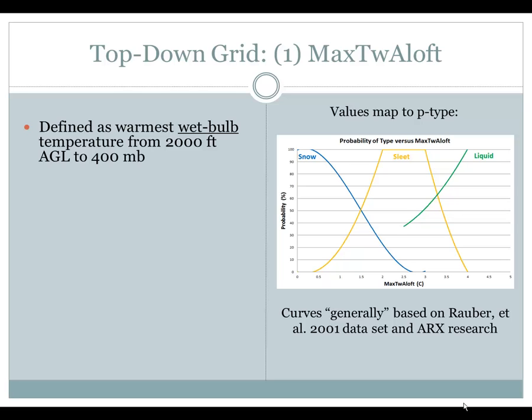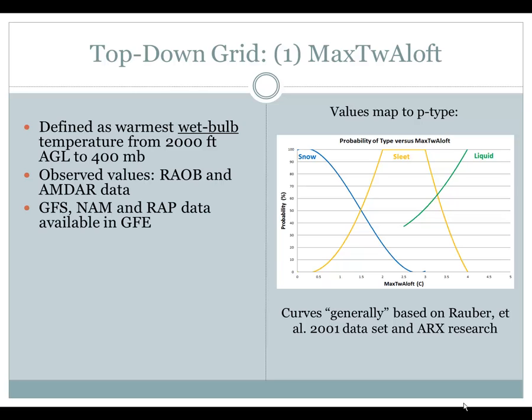The first top-down grid we will discuss is the Max Wet Bulb Aloft. It is defined as the warmest wet bulb temperature from 2,000 feet above the ground to 400 millibars. Observed values for this grid can be found in RAOB and AMDAR data. Data for this grid can also come from the GFS, NAM, and RAP in GFE. The Max Wet Bulb Aloft replaced the Max T Aloft in August 2016.